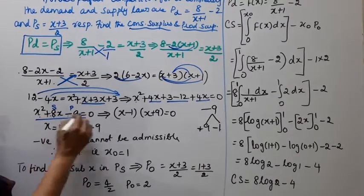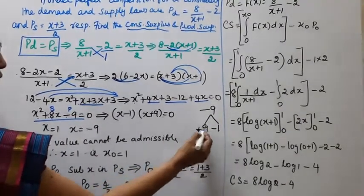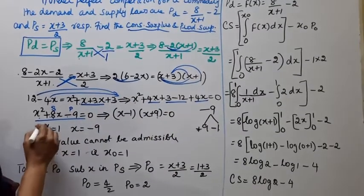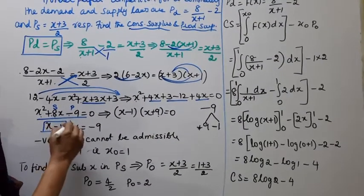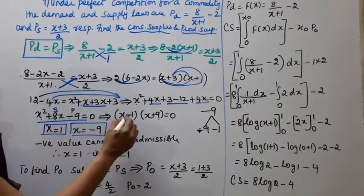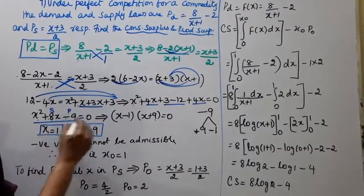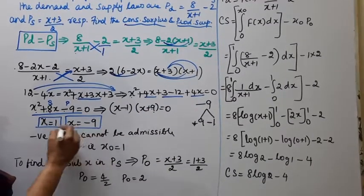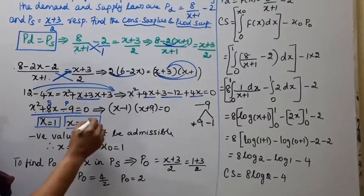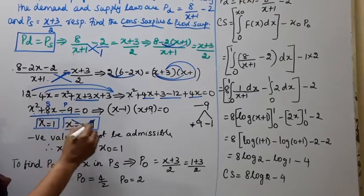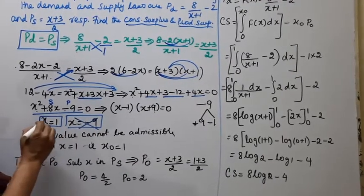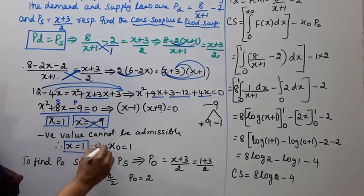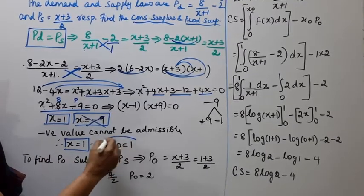Factorizing x squared plus 8x minus 9 equal to 0: product is minus 9, sum is plus 8, so factors are plus 9 and minus 1. This gives (x plus 9)(x minus 1) equal to 0. Therefore x equal to 1 or x equal to minus 9. Since negative value is not admissible, x equal to 1.